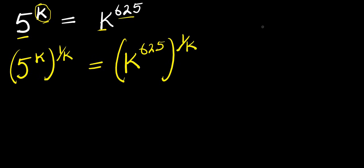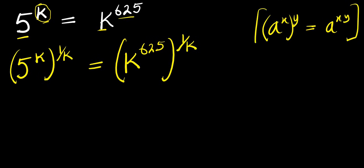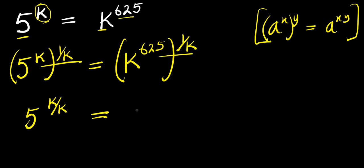Now remember, if you have 8 to the power of x, raised to the power of y, this equals 8 to the power of x times y. So let's multiply this exponent out. I have 5 to the power of k times 1, this is divided by k, equals k to the power of 6/5 times 1,